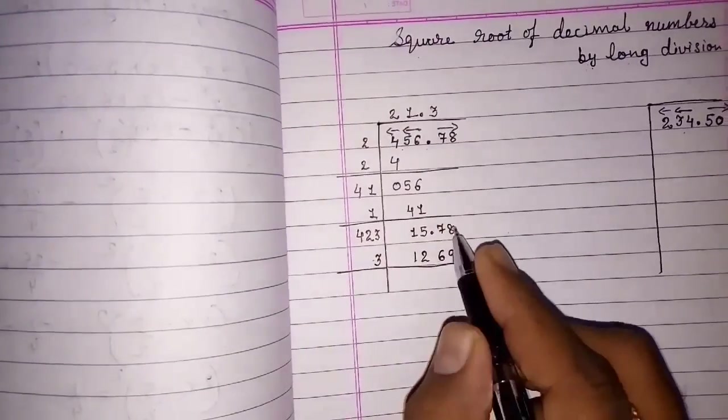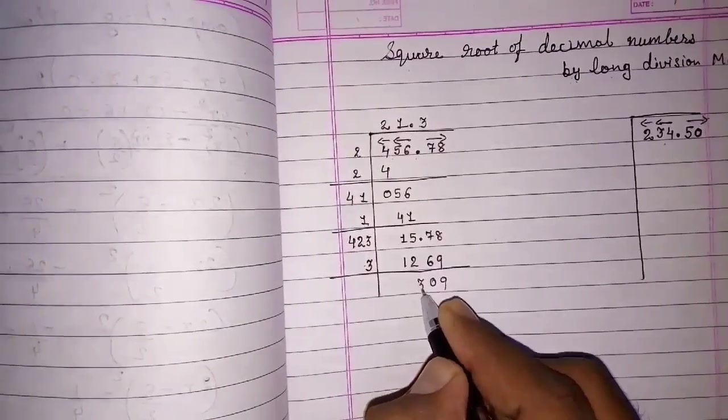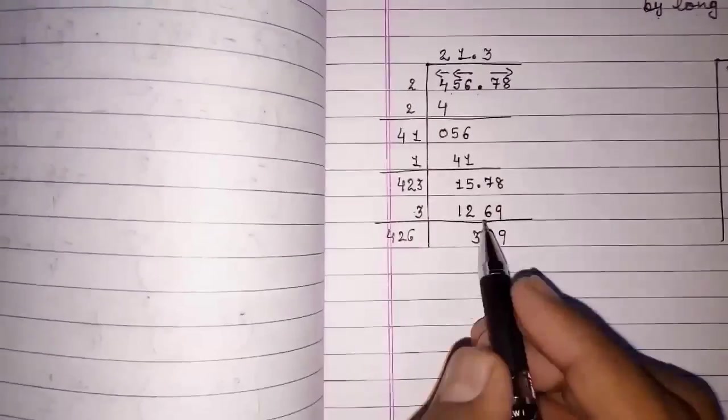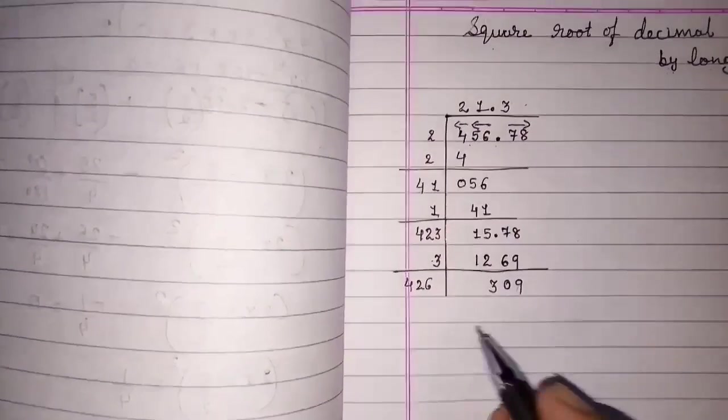And subtraction 18 minus 9, 9, 0, 3. 4, 2, 6. If you want to take two decimals, then you can solve further. Thank you.